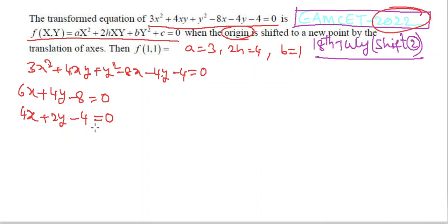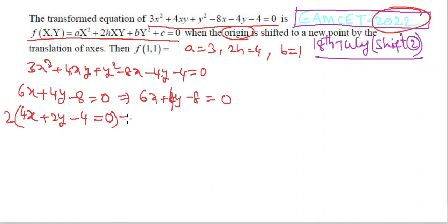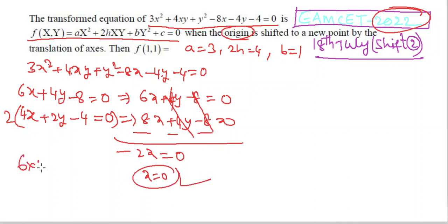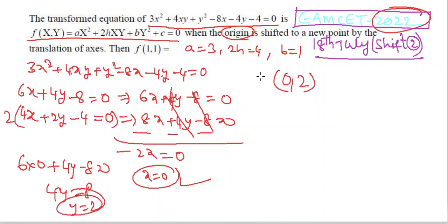Taking partial differentiation with respect to y: 4xy gives 4x; y² gives 2y; −4y gives −4. So 4x + 2y − 4 = 0. Multiplying the second equation by 2: 8x + 4y − 8 = 0. Subtracting from first: −2x = 0, so x = 0. Substituting x = 0: 4y = 8, y = 2. New origin is (0, 2).